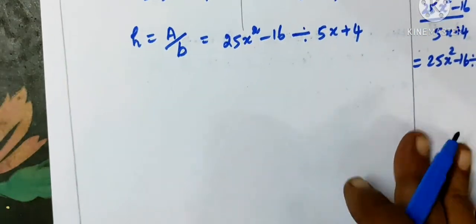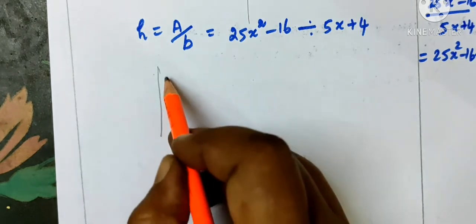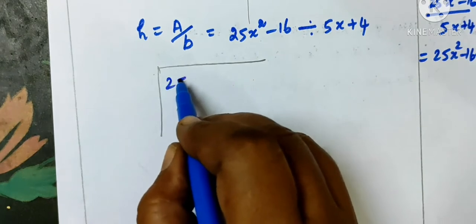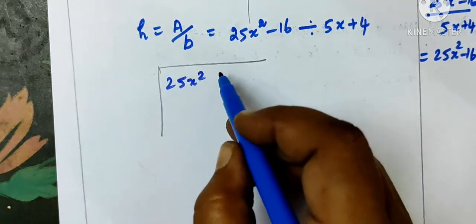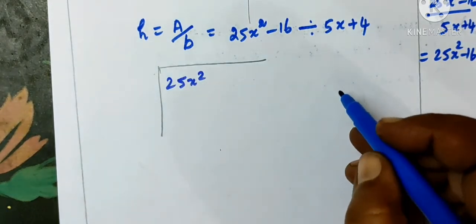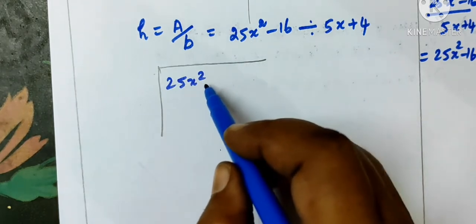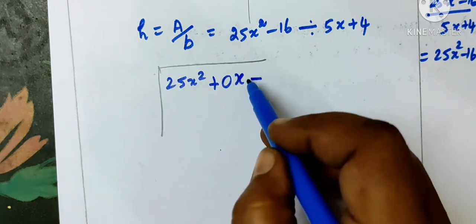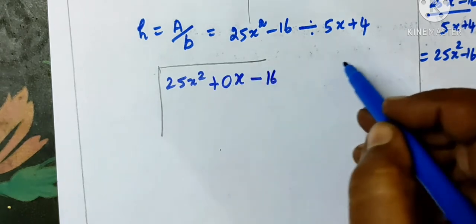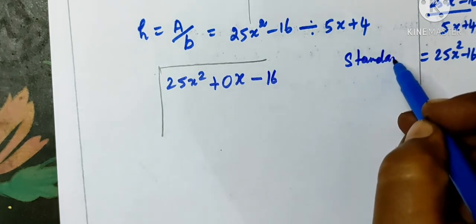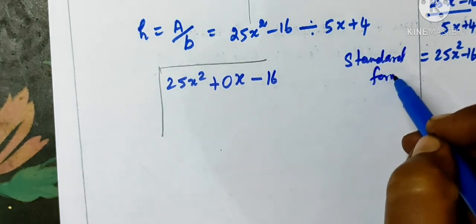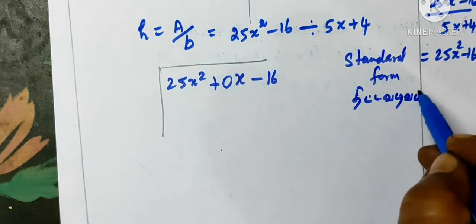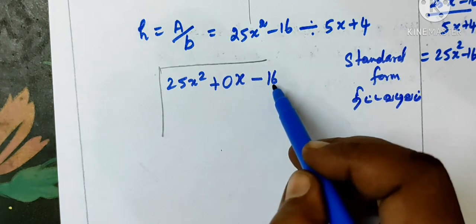Now, how do we do the division method? We have 25x square minus 16. Standard form is required — we need the x term. Since there is no x term, we write 0x. So standard form: x square term, x term, constant term.